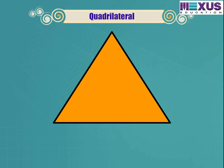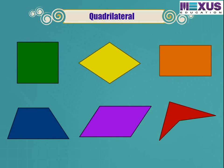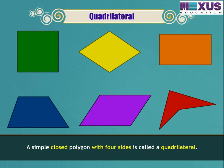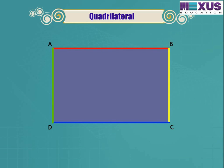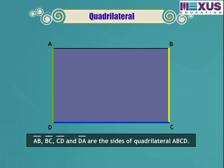We have seen a polygon with three sides called a triangle. Now let us learn about a polygon with more sides. A simple closed polygon with four sides is called a quadrilateral. Four line segments AB, BC, CD, and DA form quadrilateral ABCD. AB, BC, CD, and DA are called the sides of the quadrilateral.